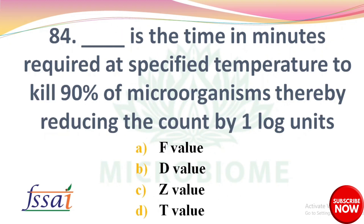DASH is the time in minutes required at the specified temperature to kill 90% of microorganisms, thereby reducing the count by one log unit. Options: A) F-value, B) D-value, C) Z-value, D) T-value. The right answer is option B: D-value.